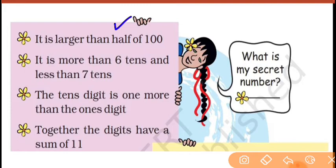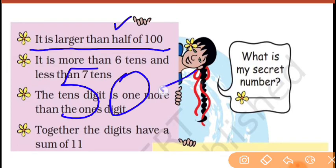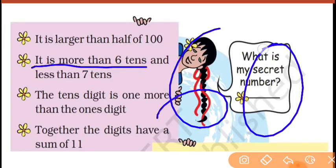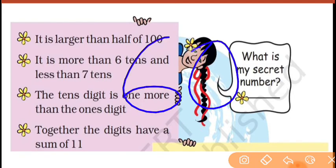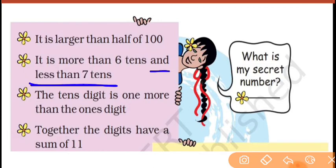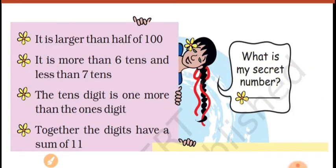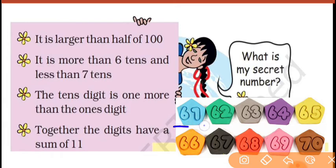Jo number aapko guess karna hai — it is larger than half of 100. 100 ka half kitna hota hai? 50. Iska matlab jo number hai woh 50 se zyada hai. Second clue: it is more than six tens — six tens ka matlab 60, so number is more than 60. Third clue: and less than 7 tens — 70 se kam hai. So the number is between 60 and 70: 61, 62, 63, 64, 65, 66, 67, 68, 69.